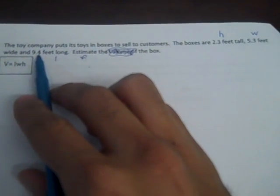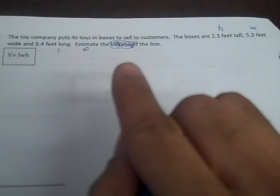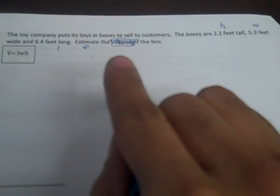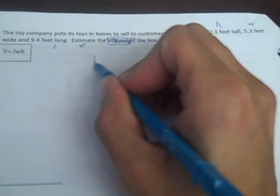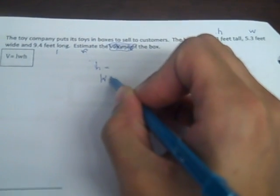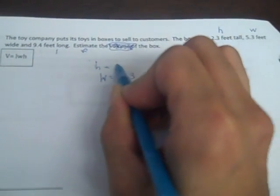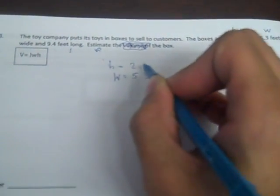So I now am looking at my numbers and I see that these numbers are decimal numbers. So I'm estimating and when I round decimal numbers, I round them to the nearest whole number. So I see that H is 2.3, W is 5.3, and length is 9.4.